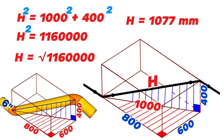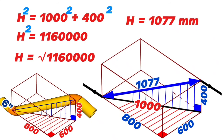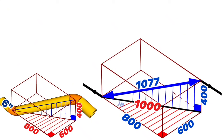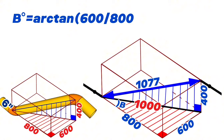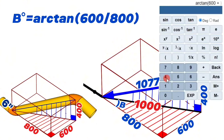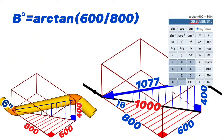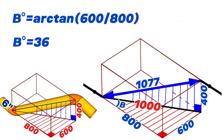The 1,077 millimeters is the distance between the centers of the butt-weld elbows. We can also calculate the degree of rotation of the pipeline. Marking the rotate angle as b: b equals arctangent of 600 divided by 800. Using a scientific calculator, arctangent(600/800) equals 36.8 degrees — so the pipeline rotation angle is 36.8 degrees.